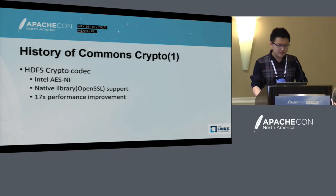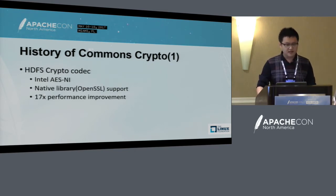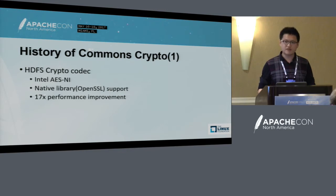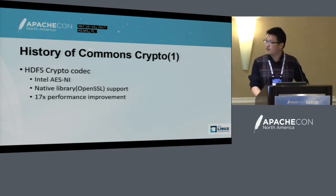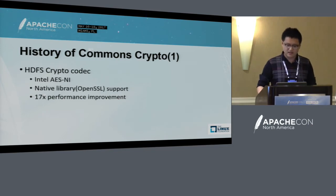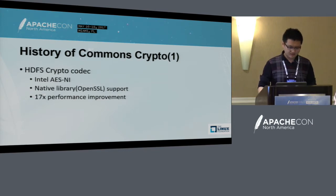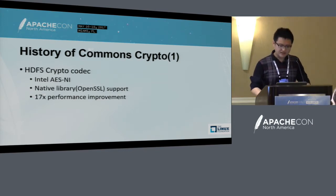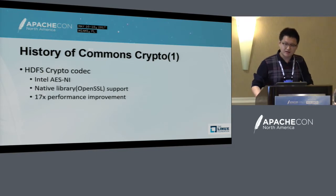Here is the history of Commons Crypto. The Intel Big Data team worked with the Apache Hadoop community to improve the performance of HDFS transparent encryption. It was first called the HDFS crypto codec, which is based on Intel AES-NI technology and the OpenSSL codec. It could improve performance by 17 times — a significant improvement. Later I will give more detail about Intel AES-NI technology.